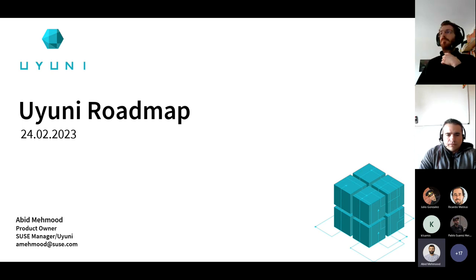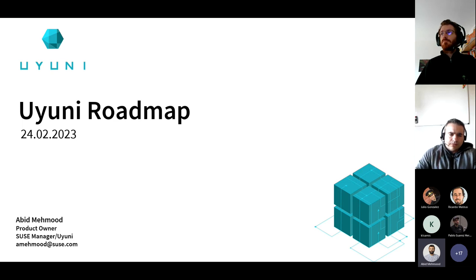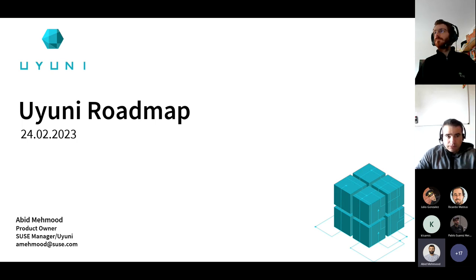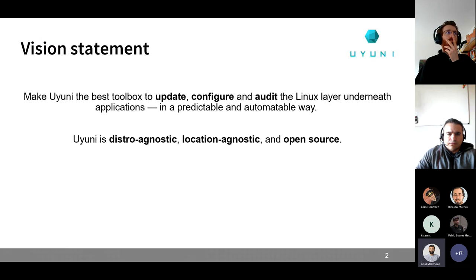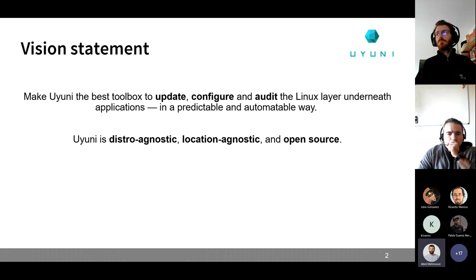Hi everyone, welcome from my side too. As mentioned in the last community hours, we were planning to present some roadmap — what we are doing and what we are planning to do. I won't be going into detail because there are quite a few topics we want to cover. When it comes to Uyuni, we would like to make Uyuni the best toolbox available to update and configure the Linux layer underneath the application, and that needs to happen in a predictable and automatable way. We also need to make sure that Uyuni is distro agnostic, location agnostic, and open source — which is the core of our values.